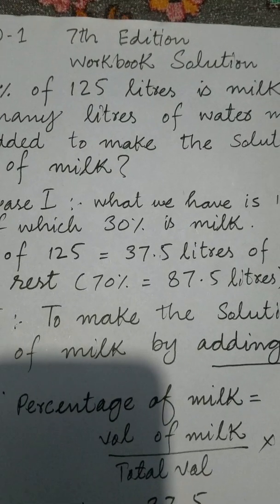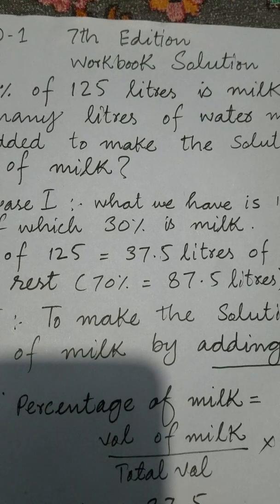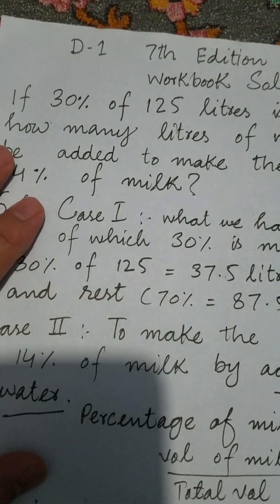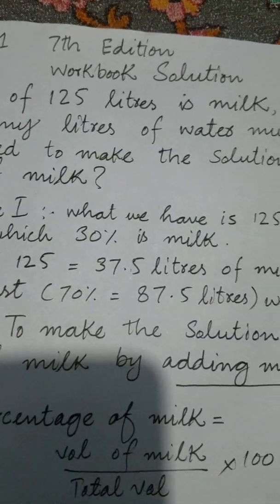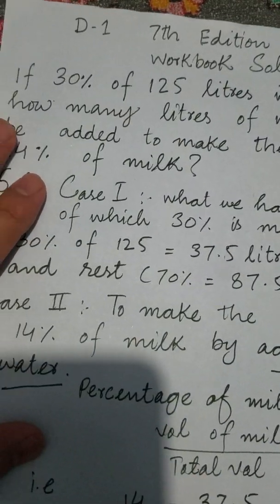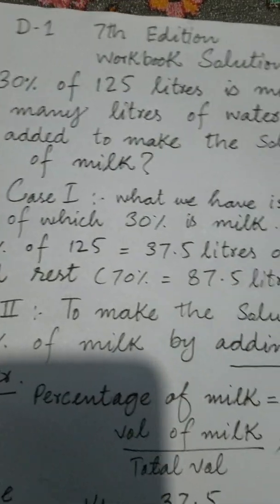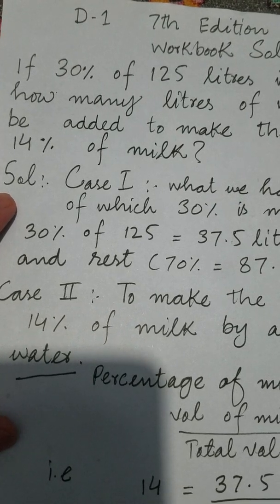Basically it is a workbook question which I have solved. The question is: if 30% of 125 liters of a solution is milk, how many liters of water must be added to make the solution 14% of milk?